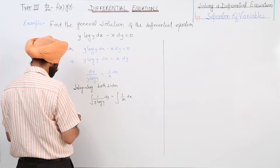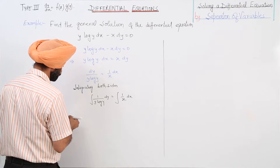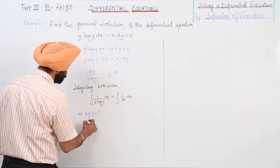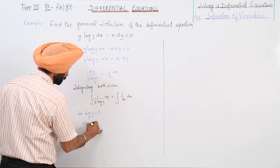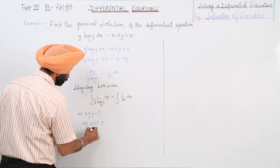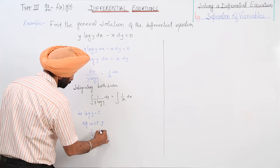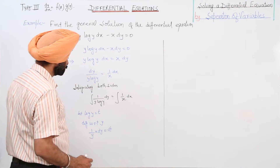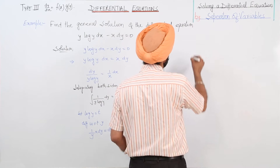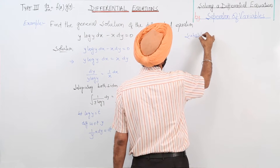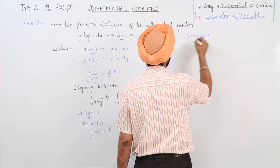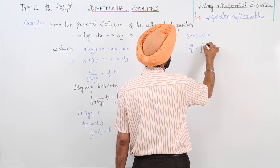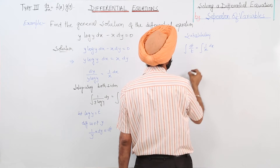Now, for the left hand side, let log y equal to t. Differentiating with respect to y: 1 upon y times dy is equal to dt. Now substituting the values — integration of dt upon t is equal to integration of 1 upon x dx.